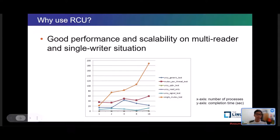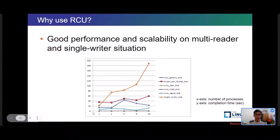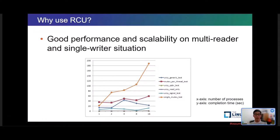Why don't we just use mutex or other locking mechanisms instead of RCU? Besides deadlock avoidance, we can also get good scalability. Using RCU can bring some benefits to performance and scalability. This is a simple benchmark using userspace RCU. The x-axis is the number of processes and the y-axis is the completion time. We can compare completion time in mutex and several RCU flavors. It is easy to see the advantage of RCU scalability.